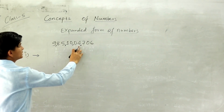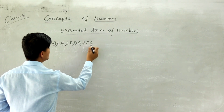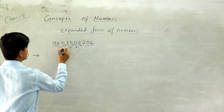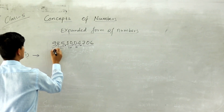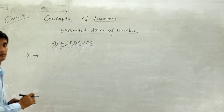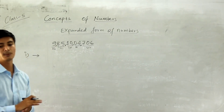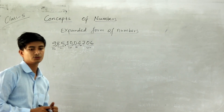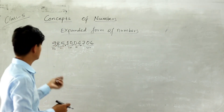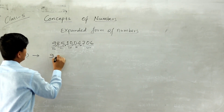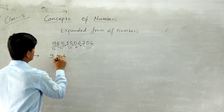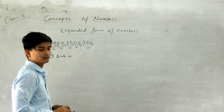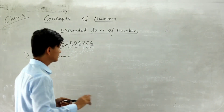First, count: ones, tens, hundreds, thousands — you have to identify which place each digit is in. This is our units place, this is our thousands place, this is our lakhs place, this is our crores place. You have to identify the place of each digit first, and then you can expand it. So the first digit — you can write it directly, then add a plus sign. If you don't add the plus sign, it will be wrong.